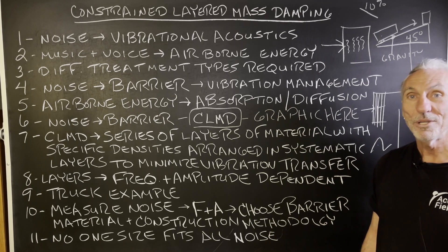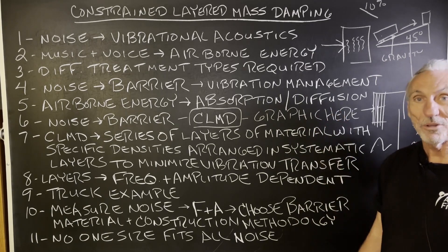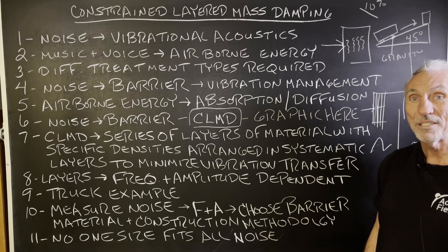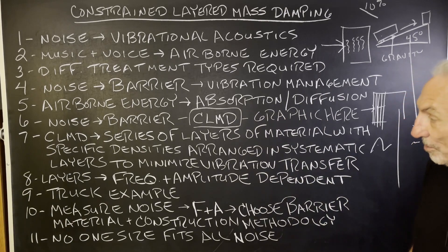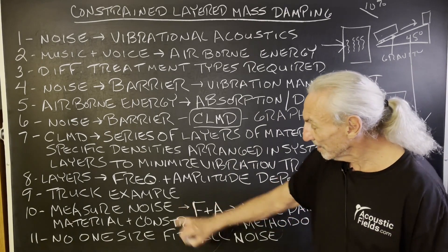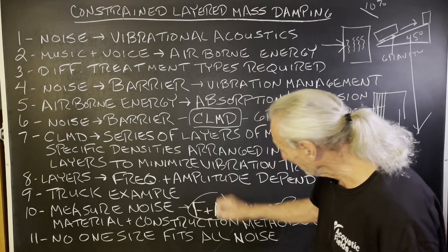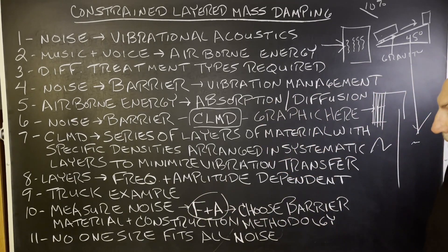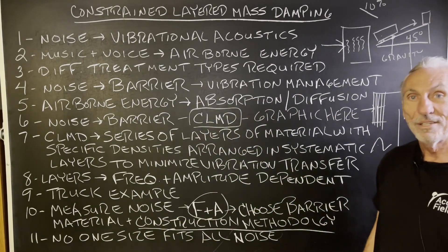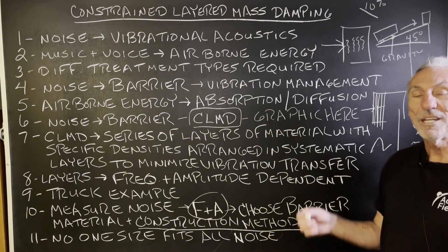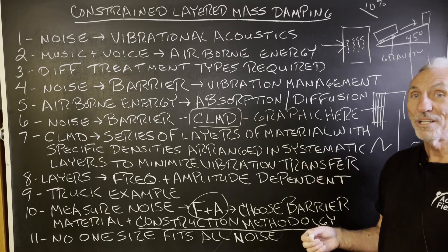We guarantee all of our noise designs 100%, because when I was a real estate developer I built and tested all of these. I know what works and what doesn't, and only through experience and testing will you get that. We can help you and give you the solutions you need. You've got to measure the noise, because as you can see with our mass damping approach, every noise is frequency and amplitude dependent. You have to choose the correct barrier and the correct construction methodology. There is no one size fits all — everything is specific when it comes to noise: the material types, the way you arrange them, and the way you install them.